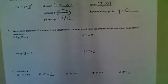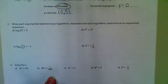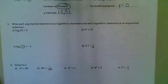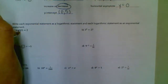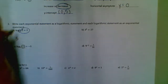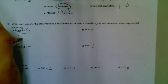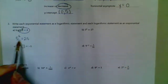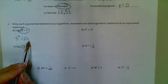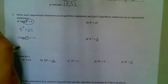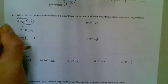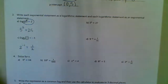Number 3 says write each exponential statement as a logarithmic statement and each logarithmic statement as an exponential statement. A couple different ways you guys can do this — if your teacher used the bay method, use that; if you use the swoop method, use that. I'm going to do the swoop on this first one. So this is 5, my exponent would be 2, equals 25. You just follow your numbers — 5 squared is 25. This needs to logically make sense.